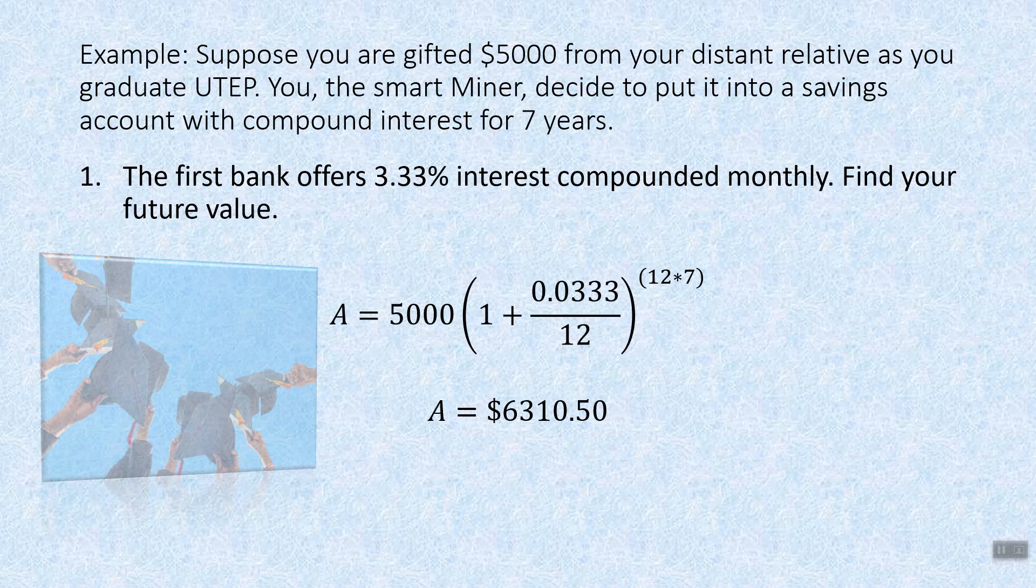Suppose you're gifted $5,000 from your distant relative as you graduate UTEP, because you're going to graduate. You, the ever so smart miner, decide to put it into a savings account with compound interest for seven years. But which bank are we going to put it in? The first bank offers 3.33% interest compounded monthly, and we can find our future value.